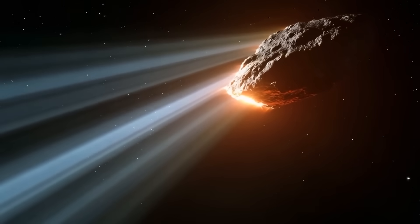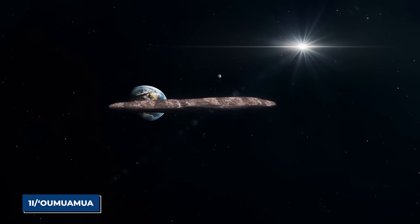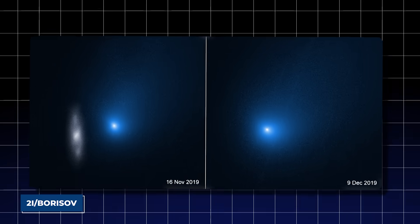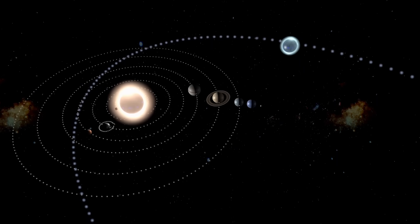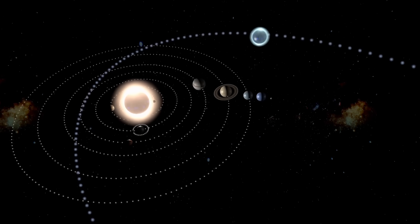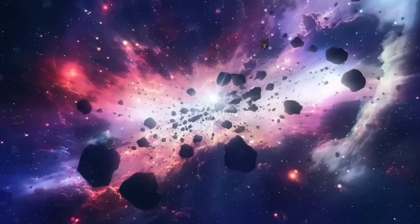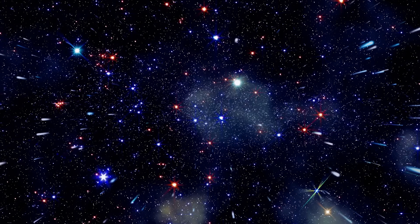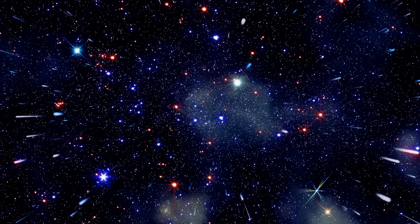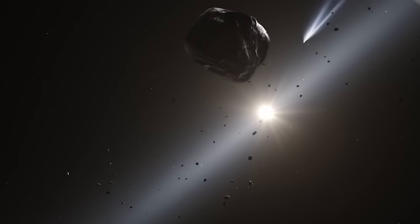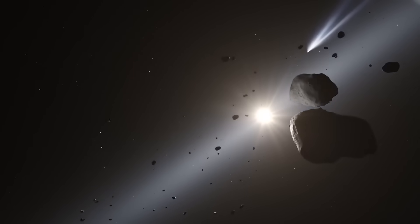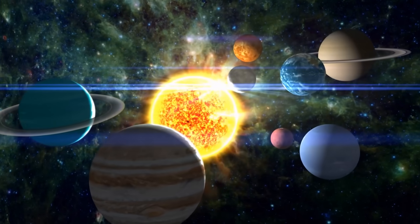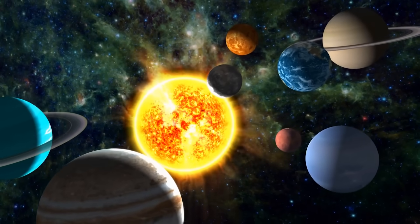3I Atlas, the third confirmed interstellar object after 1I Oumuamua and 2I Borisov, was first spotted as a faint, fast-moving point of light cutting across the night sky. Unlike comets that form within the solar system, interstellar objects carry chemical signatures of other star systems, frozen remnants of alien worlds cast out from their birthplaces. The early observations of 3I Atlas suggested an elongated cometary structure, faintly glowing with sublimating ices as it approached the inner solar system.